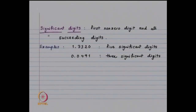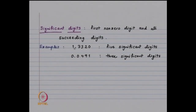The definition of significant digits is: the first non-zero digit and all succeeding digits. So if you look at the number 1.7320, there are 5 significant digits. Whereas if you look at 0.0491, there are only 3 significant digits — the leading zeros are not counted as significant.